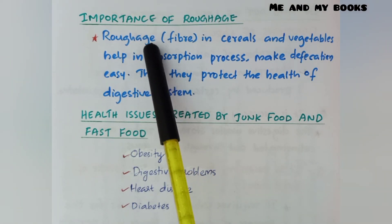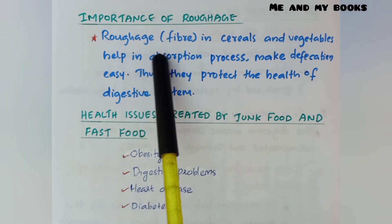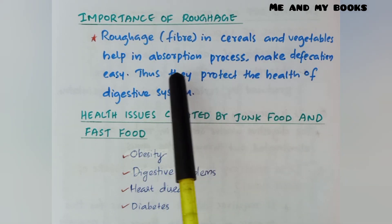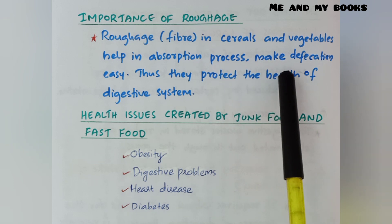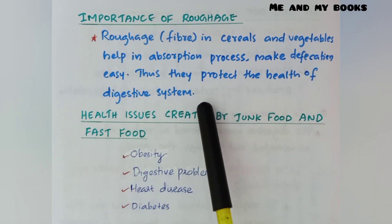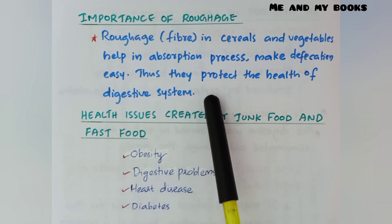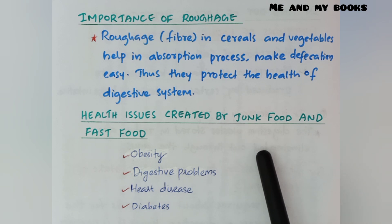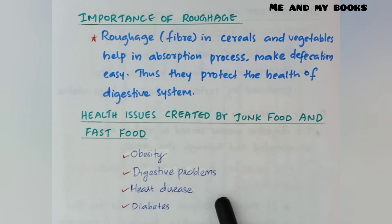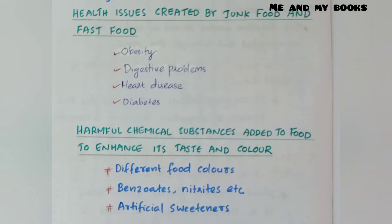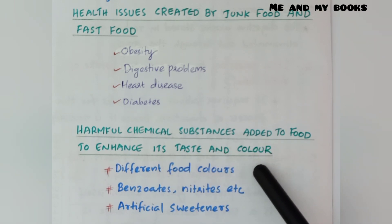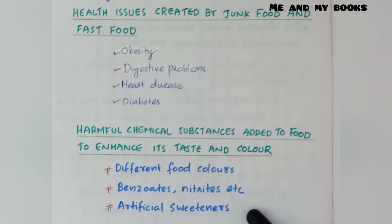Importance of roughage: roughage or fiber in cereals and vegetables helps in the absorption process, makes defecation easy, and protects the health of the digestive system, so we should eat cereals and vegetables. Health issues created by junk food and fast food include obesity, digestive problems, heart disease, and diabetes. Harmful chemical substances added to food to enhance taste and color include food colors, chemicals like benzoates and nitrates, and artificial sweeteners.